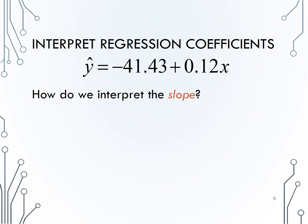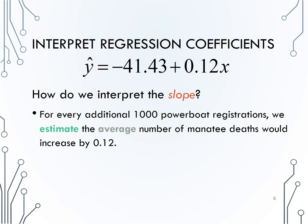Remember, the slope of the line is interpreted as a one-unit increase in x is associated with a slope increase or decrease, depending on the sign, change in y. In this context, for every additional 1,000 powerboat registrations – remember, powerboat registrations were measured in thousands, so a one-unit increase would be 1,000 more powerboat registrations – we estimate the average number of manatee deaths would increase, because the slope is positive, by 0.12.